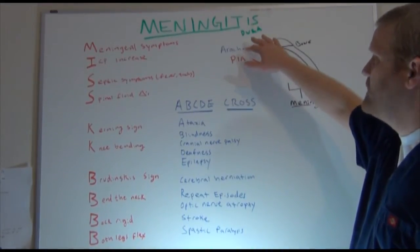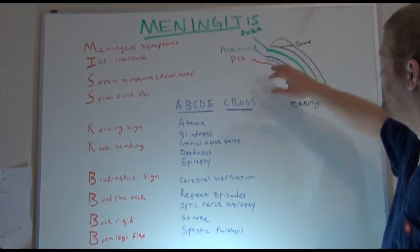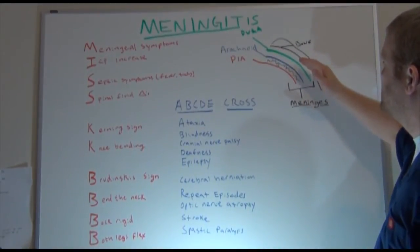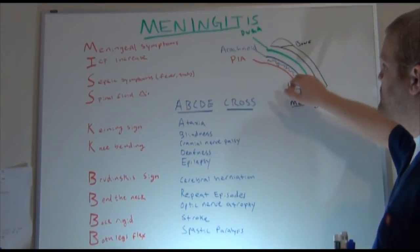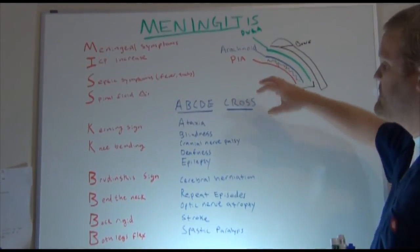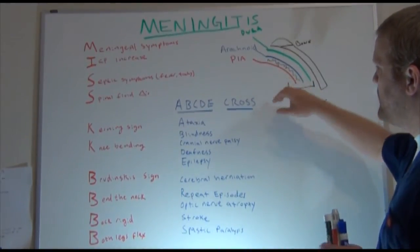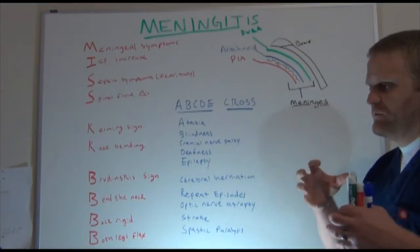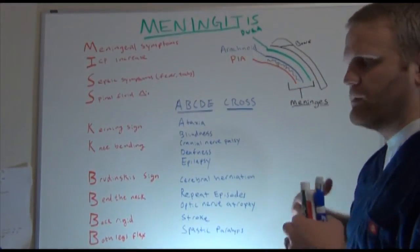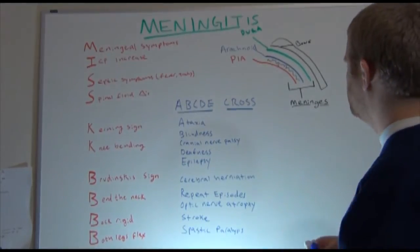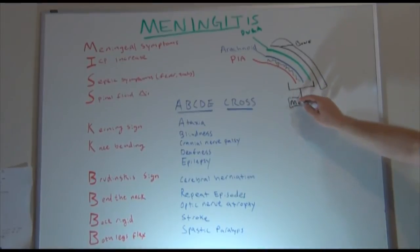Dura mater actually means 'tough mother.' The dura mater is the first layer just right below the skull. Below that you have your arachnoid space, and the arachnoid space is very web-like. Just below that you have your pia mater, which actually kind of envelops the brain tissue and comes onto it very tight, while the other two are much more loose with more space between them. Those three layers are called the meninges.